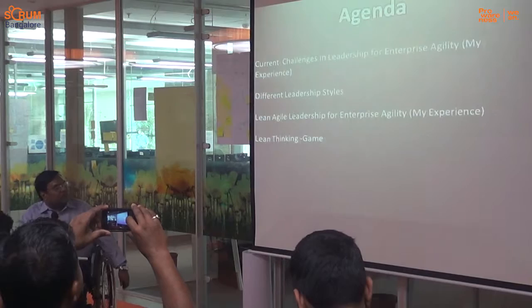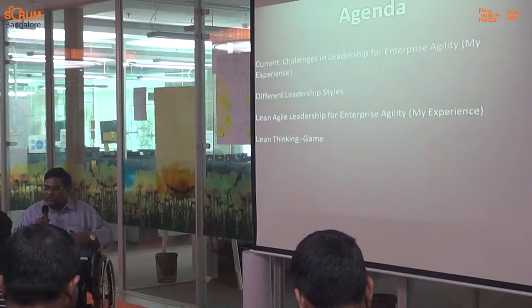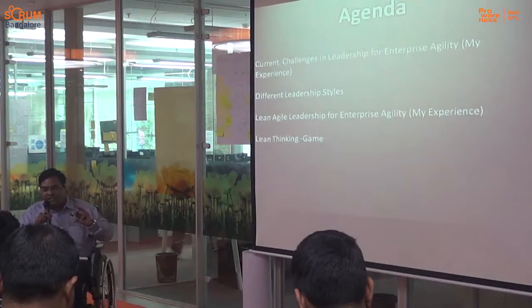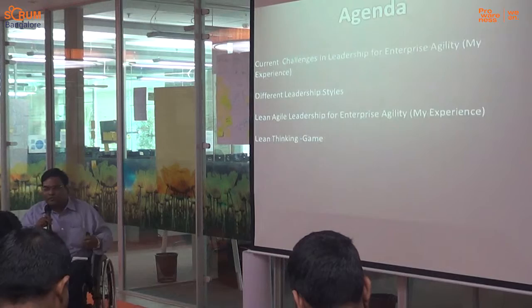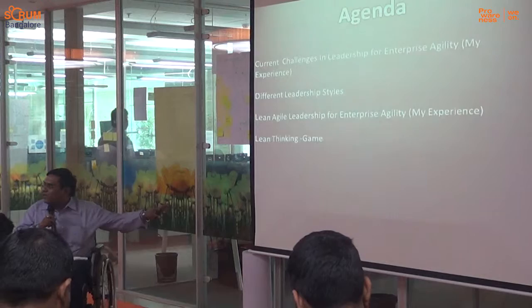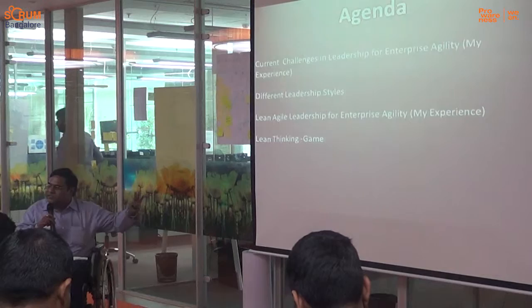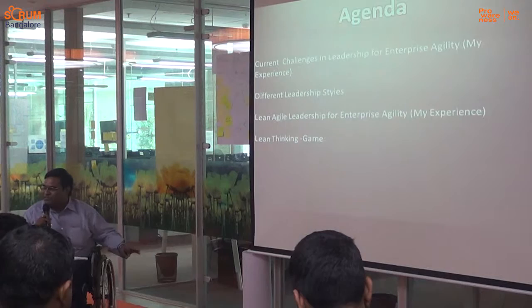The agenda of my discussion: initially I will talk about what are the current challenges that leadership is facing to achieve enterprise agility. Then I will cover different leadership styles one can choose to execute. Then I will talk about how lean-agile leadership — not traditional leadership — can play its role to achieve enterprise agility success. The last part is a small game on lean thinking, around 10 minutes.